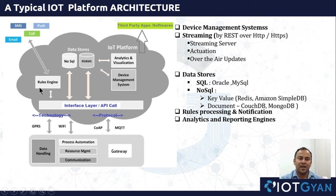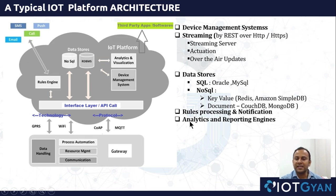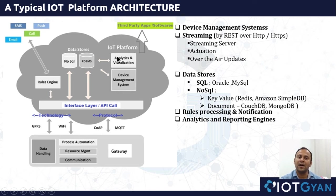Third is the rules engine. When data is available we can define simple rules — greater than, less than, or equal to — so that if a temperature value reaches a certain level, an SMS, email, or notification can be sent to the user. The last component is the analytics and reports engine. With terabytes of data the goal is to generate business intelligence, and basic analytics is built into the IoT platform to understand the meaning of that data. Visualization allows viewing data in a web UI or through a mobile application connected to the cloud.